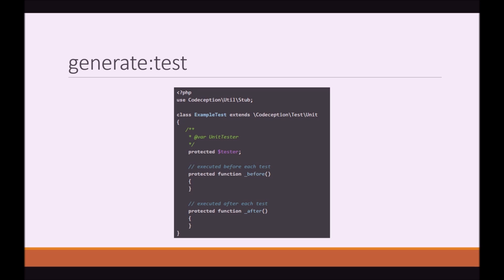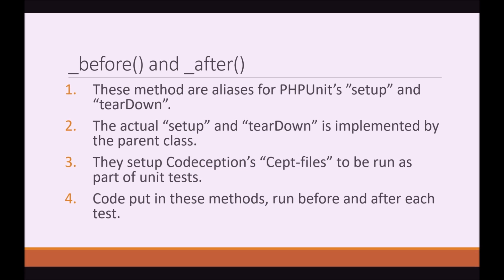Notice there are some differences — instead of tearDown or setUp, there's before and after. These methods are aliases for PHPUnit's setUp and tearDown. The actual setUp and tearDown methods are implemented by the parent class. They set up Codeception's step files to be run as part of unit tests. Code put in these methods runs before and after each test.